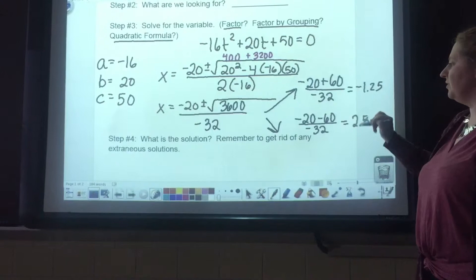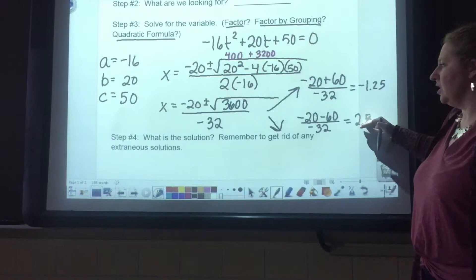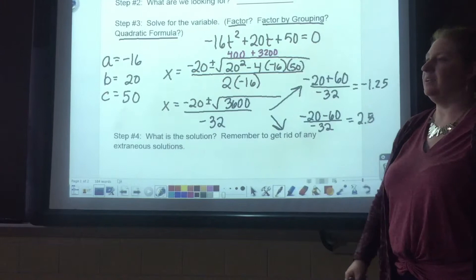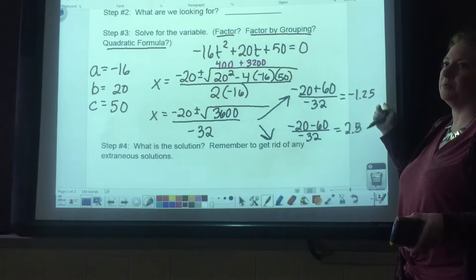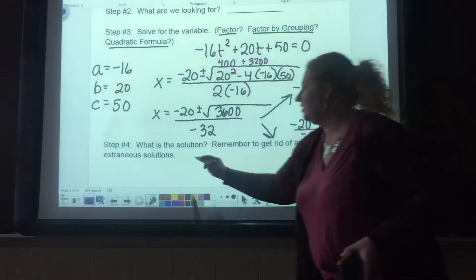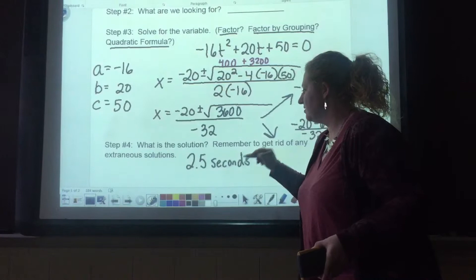So that leads us to step number 4. We have two solutions, but the question is, what is the only solution possible? Remember, we need to get rid of any extraneous solutions. Last week, we talked about how distance cannot be negative. Also, time cannot be negative. It would not be possible for the golf ball to take negative 1.25 seconds. So we're going to cross that off, which leaves us with 2.5. Our answer is 2.5 seconds is the time it takes for the golf ball to land on the ground.